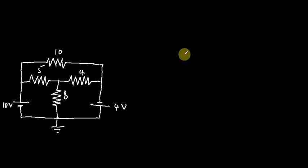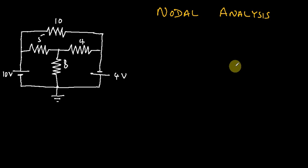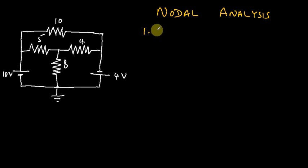So what we want to do here is deal with nodal analysis. Just like with mesh analysis, I'll write out the steps. With nodal analysis there are effectively three steps. In our first step, we assign names to all the nodes — we label all nodes.